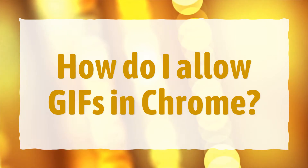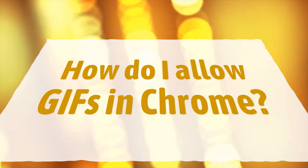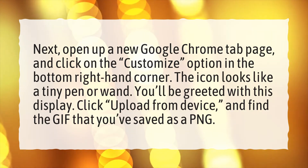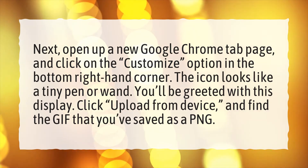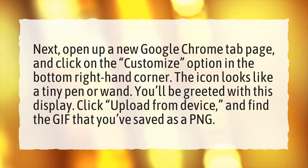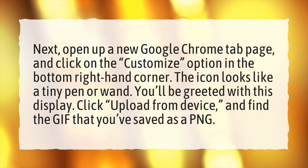How do I allow GIFs in Chrome? Open up a new Google Chrome tab page and click on the Customize option in the bottom right-hand corner. The icon looks like a tiny pen or wand. You'll be greeted with this display. Click Upload from Device and find the GIF that you've saved as a PNG.